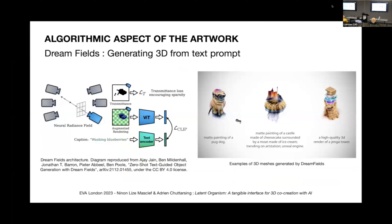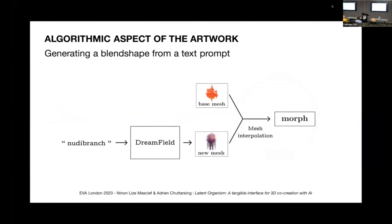The generative aspect of our project is built on Dreamfields, a model trained to create a link between text and 3D. This model can generate a corresponding 3D shape and texture from a given text input. The process begins with several textual prompts generated by an embedding model trained on an encyclopedia of life. These prompts are used as inputs for the Dreamfields model, which generates 3D meshes from them.